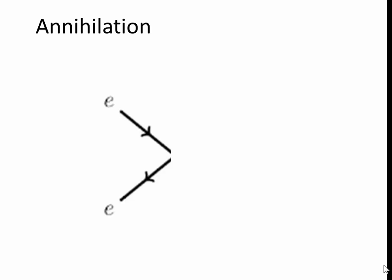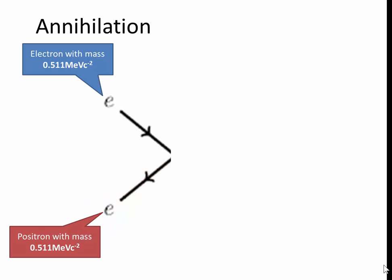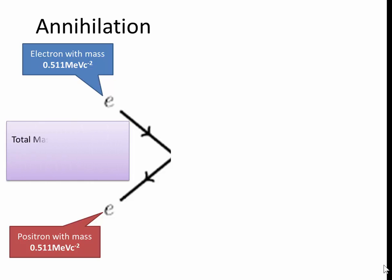So the positive positron and the negative electron come together. This is an electron with a mass of 0.511 MeVc to the minus 2 and the same mass of a positron. They come together. The total mass together adds up to twice that. So it produces a total mass of 1.022 MeVc to the minus 2. So the energy that's produced is 1.022 MeV, and that is turned into a photon.